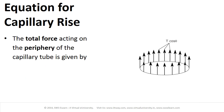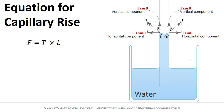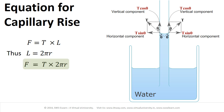Hence, the total force acting on the periphery of the capillary tube is given by F equal to T into L. The total length along the periphery is 2πR, thus L equal to 2πR. Hence, force is equal to T into 2πR.